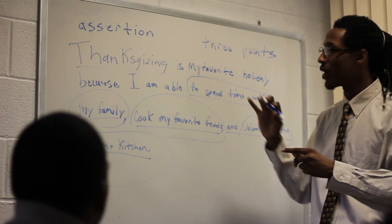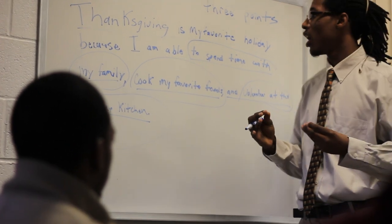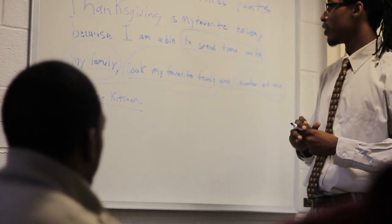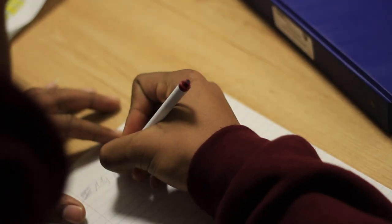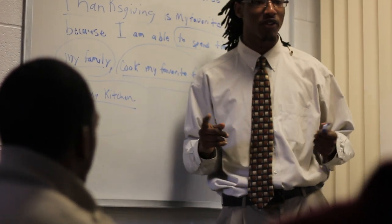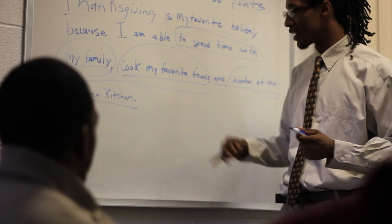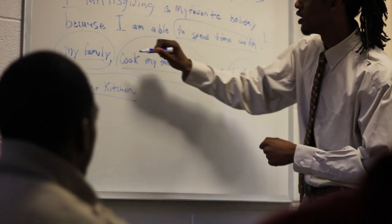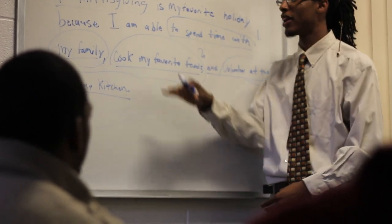If I wrote a vague thesis, where are my papers headed? Without clear points, the reader would be like, what do you mean by spending time with family? That doesn't have any substance to it. He was correct when he said Thanksgiving is my favorite holiday. When Jonathan came up and circled the three points, he was correct. I want to spend time with my family — that's one paragraph. I'm cooking my favorite foods — that's a second paragraph. And volunteer at a local soup kitchen — that's the third paragraph. So this is basically the math of my paper and my thesis statement.